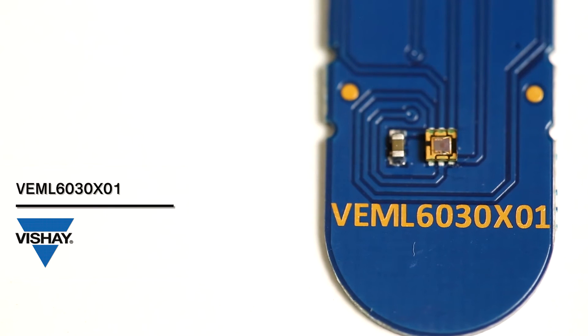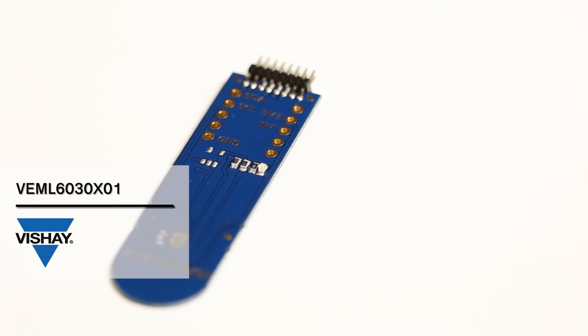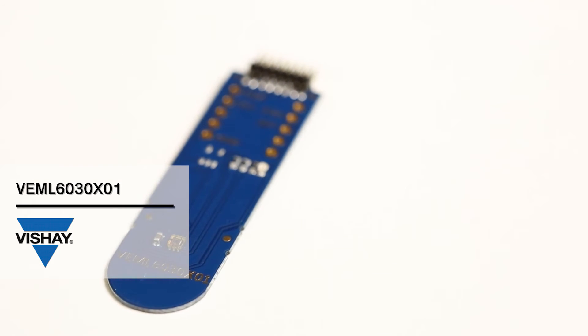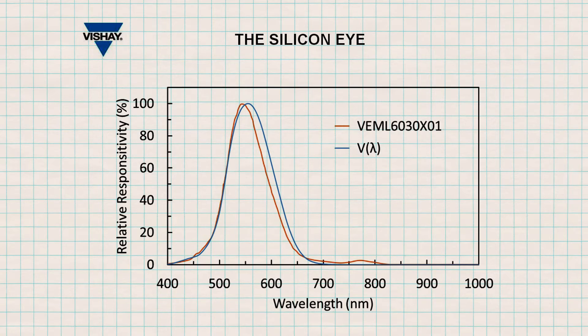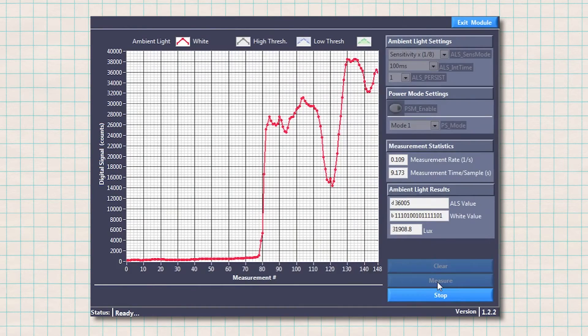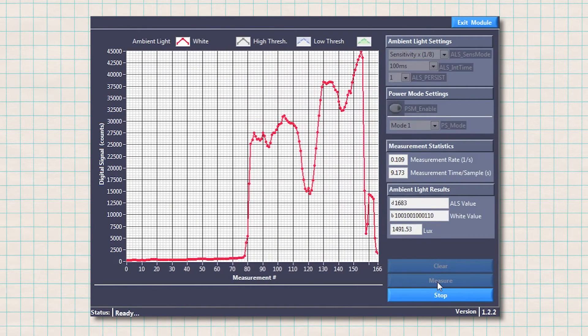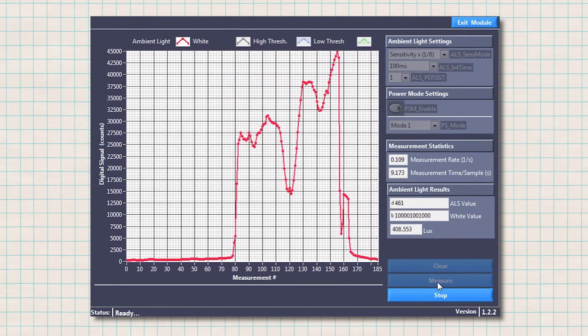Now that units are well defined, we can look at Vishay optical sensors. The VEML6030 from Vishay is a high-accuracy ambient light sensor. It includes a high-sensitive photodiode, a low-noise amplifier, and an ADC. The value is then readable through an I2C interface. It is called a silicon eye, as the response is very close to a human eye. In a sunny day in Colorado, a value of 40,000 lux is easily reachable, as we can see on the curve.